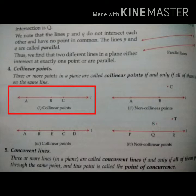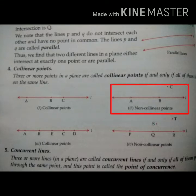In this figure A, B, C are the collinear points of line l but in the second figure A, B, and C are non-collinear points of line l.